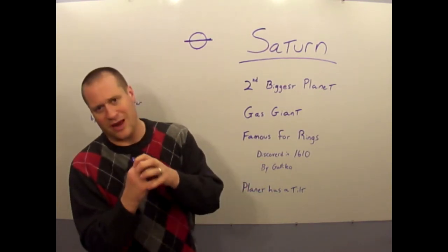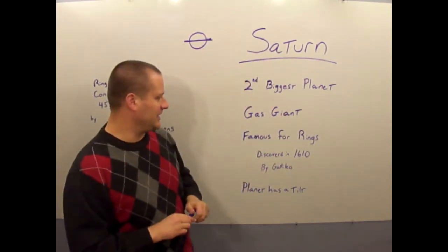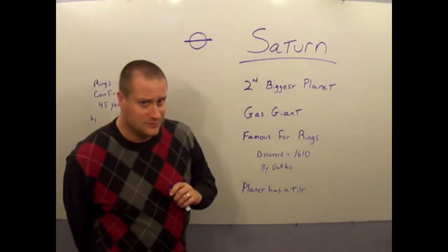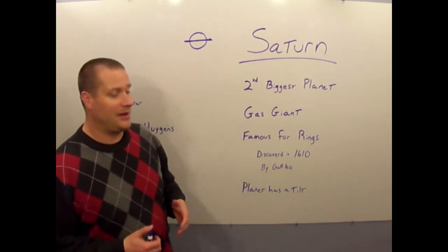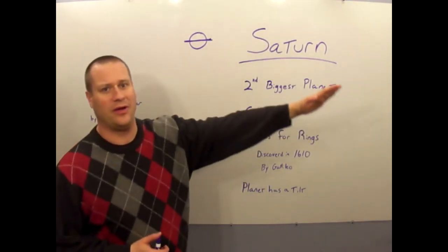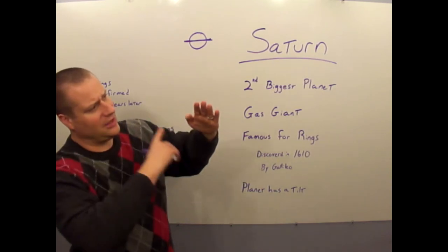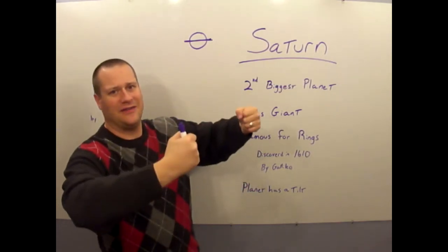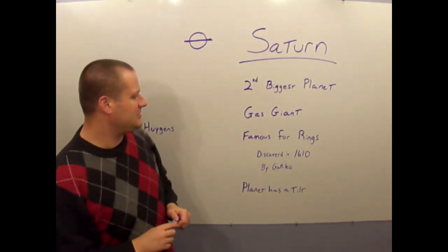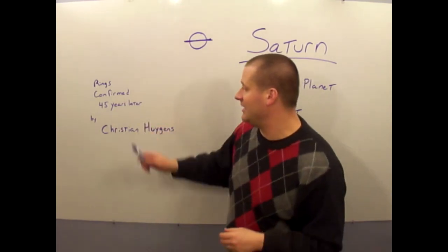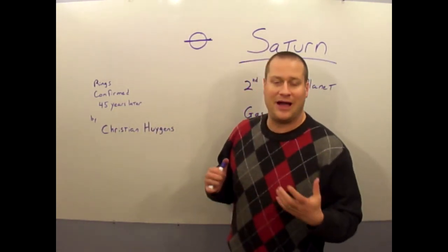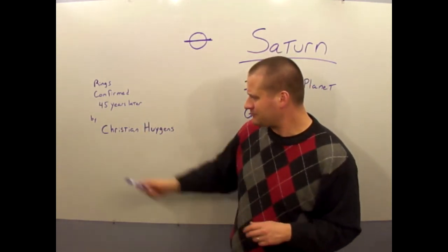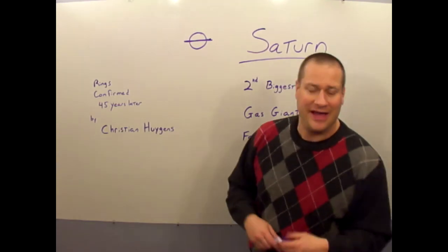Saturn is famous for its rings. Whenever we think of Saturn, we think about the rings that go all the way around, the rings of Saturn. They were discovered in 1610 by Galileo. However, the planet has a tilt to its axis, which means depending on where it is in its orbit, the image, or the part of the rings that you get to see, is different. So when Galileo looked at it, he didn't notice them as rings. He actually thought they looked like handles on the side of the planet, which of course perplexed him. He thought it was very strange indeed. But it wasn't until 45 years later, a man named Christian Huygens, he discovered that there were actually rings. So he probably caught it in a little bit different part of the orbit and was able to determine that there were indeed rings that went all the way around the planet.